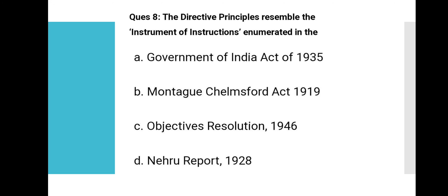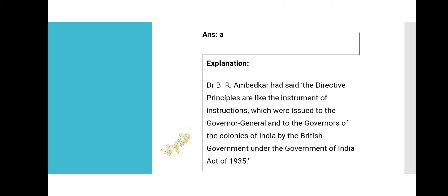Question 8: Directive principles resemble the instrument of instructions enumerated in which act? Option A: Government of India Act 1935. Option B: Montagu-Chelmsford Act 1919. Option C: Objectives Resolution 1946. Option D: Nehru Report 1928. Option A is correct. Dr. B.R. Ambedkar said DPSPs are like instruments of instructions issued to the governments of the colonies of India by the British government under the Government of India Act of 1935.